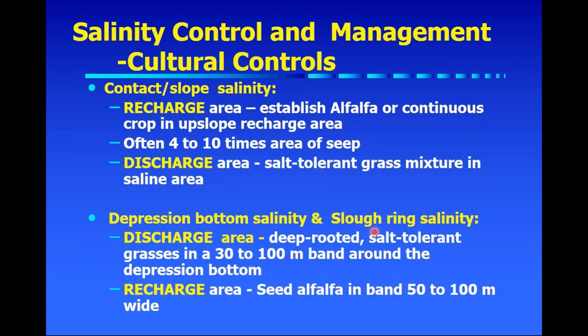For the example of contact slope salinity, one of the more common types in Alberta and Saskatchewan: in the recharge area, we would recommend establishing alfalfa, or at the very least make sure you're growing crops continuously, preferably longer season, higher water use crops. Keep in mind that the recharge area is probably going to be at least four to ten times the area of your saline seep. In the discharge area, once the EC is more than six, it's probably best to establish a mixture of salt-tolerant grasses to start using up that water.